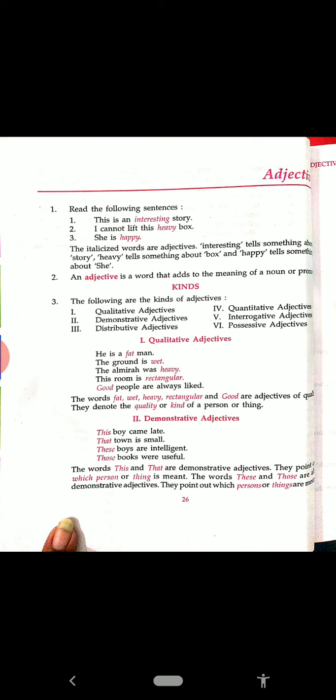The ground is wet. What type of ground? Wet. The almira was heavy — heavy almira. The room is rectangular. Good people are always liked — good people. What type of people? Good. So the words fat, wet, heavy, rectangular and good — they are telling the quality or kind of a person. This is called qualitative adjective.